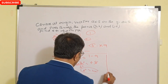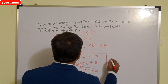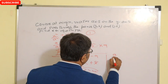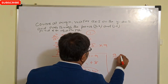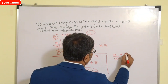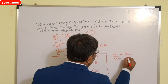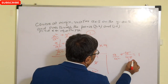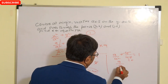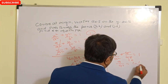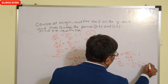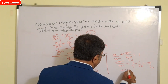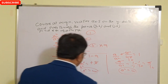Now put the value of b² = 40 into the second equation: 9/a² + 4/40 = 1, so 9/a² + 1/10 = 1. Therefore, 9/a² = 1 − 1/10 = 9/10. The 9s cancel, giving a² = 10.